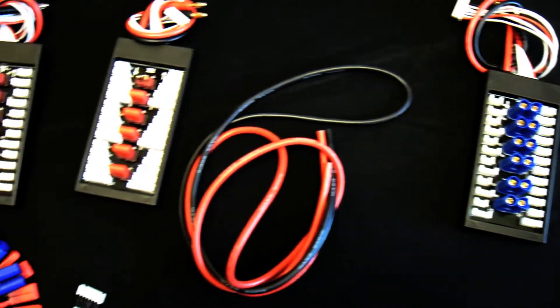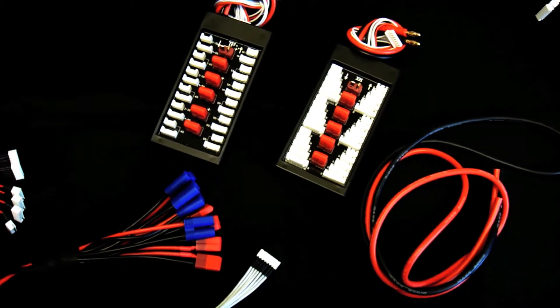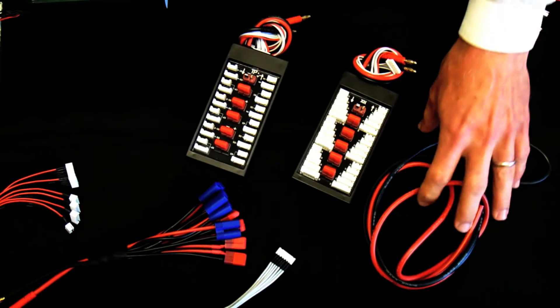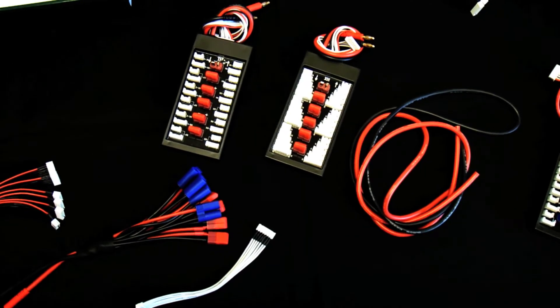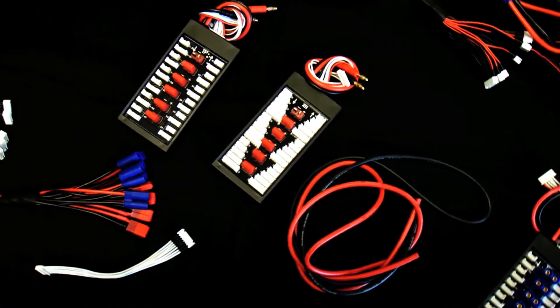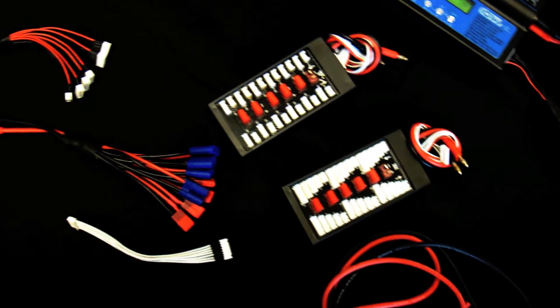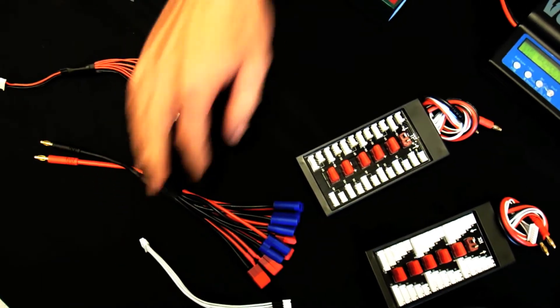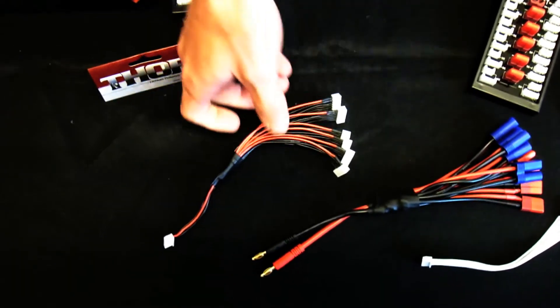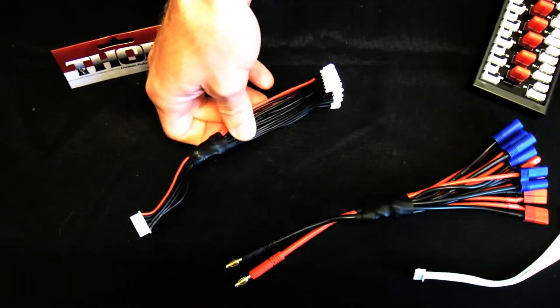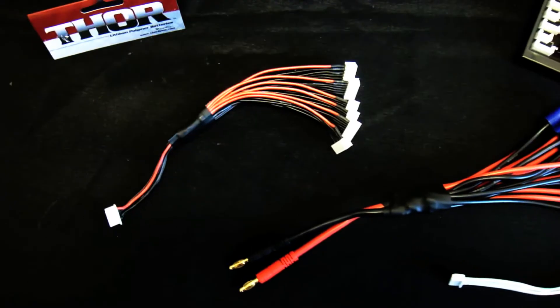Some of the other accessories that are available through this Thor product line are wiring - 10 gauge and also 12 gauge are available. There are also balance extension leads. There's a couple of additional balance boards available. This is a five cell balance cable.